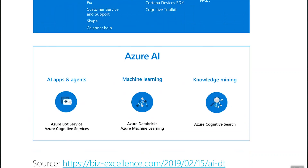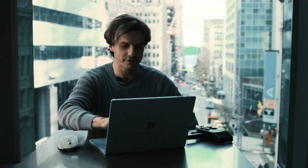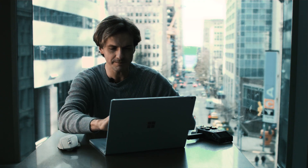Speaking about Azure artificial intelligence, the current messaging is that there are three different areas: artificial intelligence applications and agents, separately machine learning capabilities, and separately knowledge mining. This is reflected in the decision tree.